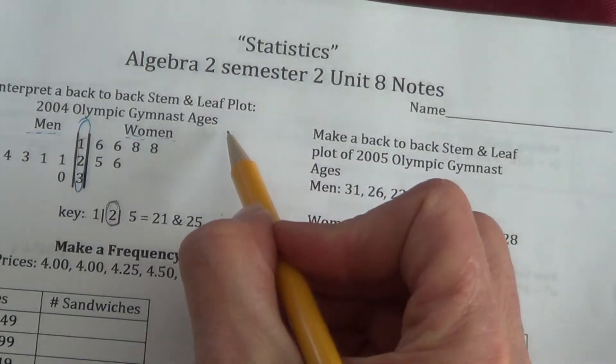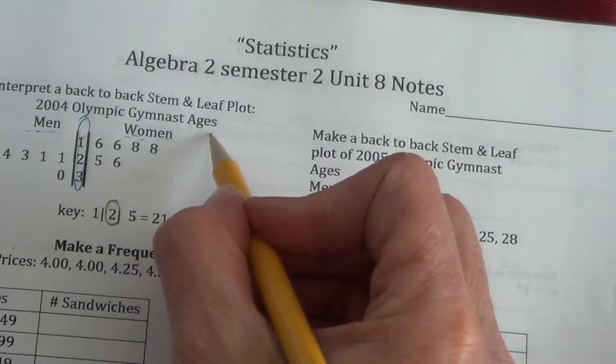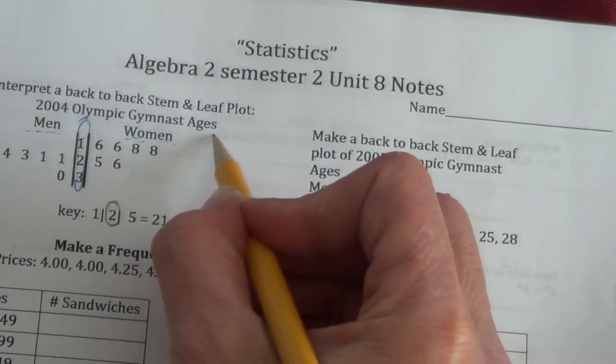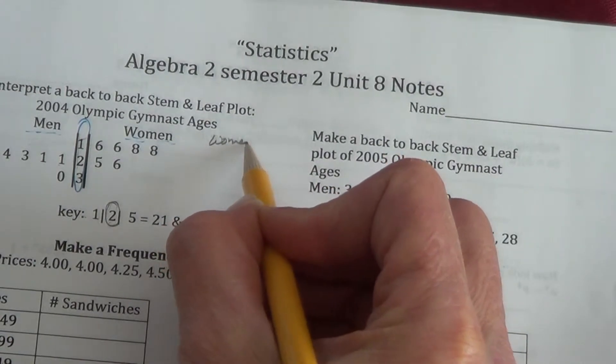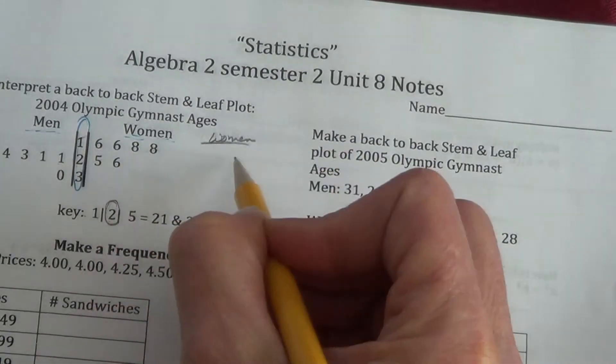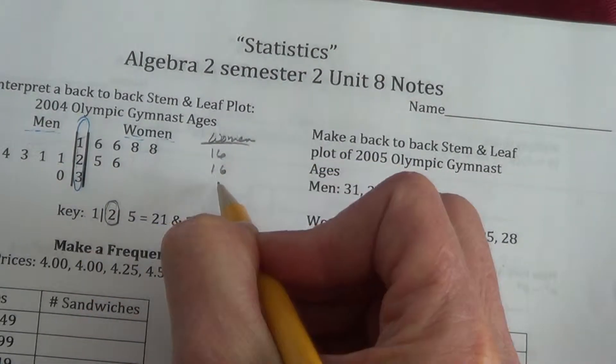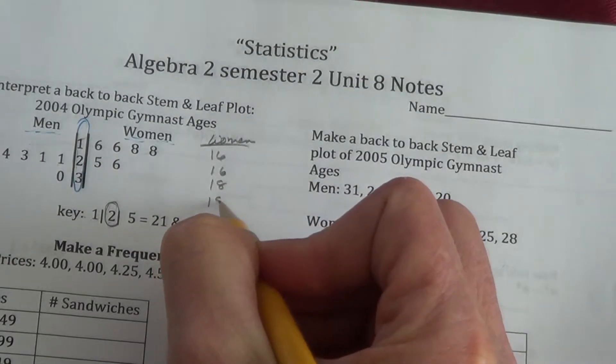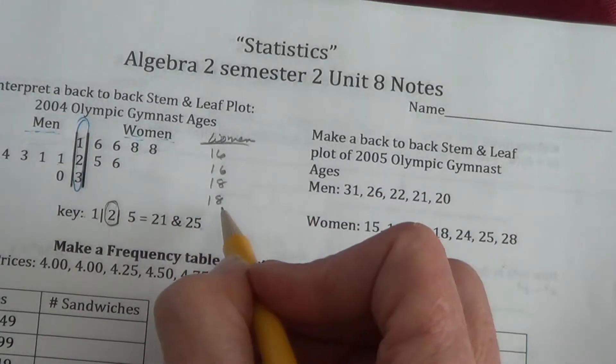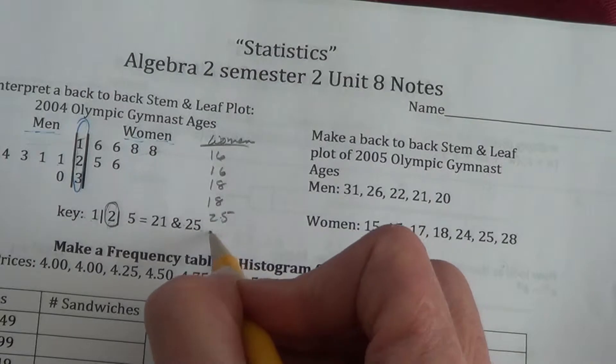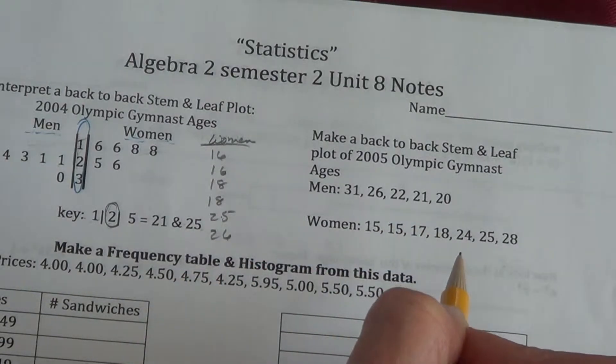For the women, we do have a lot of teenage women. For the women, the age listing would be 16, 16, 18, 18, 25, and 26. Okay?